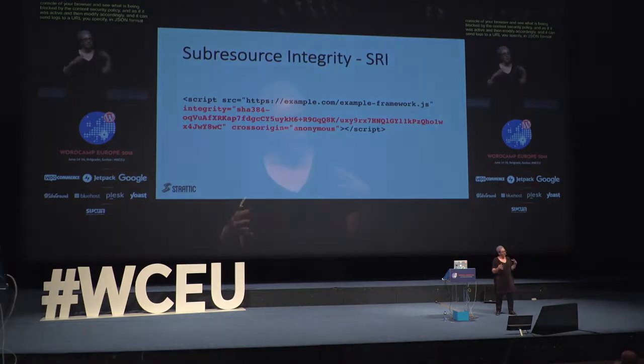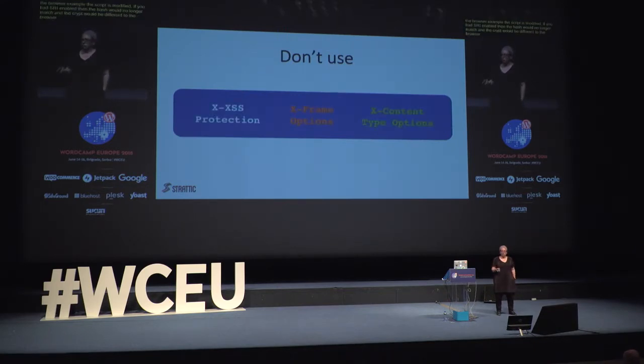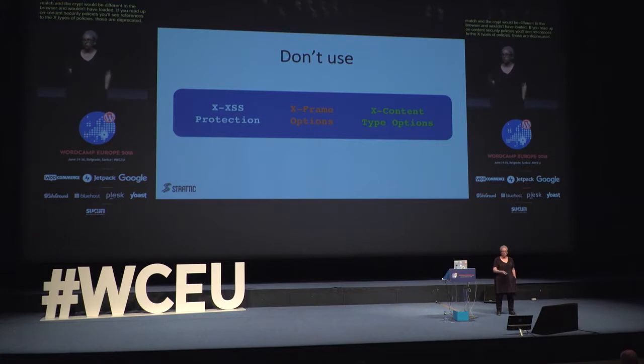SRI — Subresource Integrity — adds another layer of security, though it's kind of complex. What it does is: here's a reference to a script and here's a hash of that script. If that script gets updated — say jQuery gets updated — then that hash is no longer relevant and the browser should not load that resource. In the BrowseAloud example, their script was modified — if you had SRI enabled, the hash would no longer match and the script would be clearly different to the browser and it wouldn't have loaded. If you read up on content security policies, you'll see references to the X-type policies — those are deprecated and no longer relevant. There are different policies that have taken their place, so just be aware because you'll come across a lot of content that refers to them.